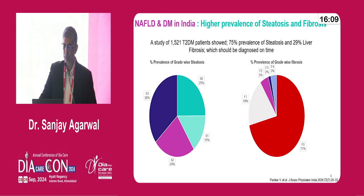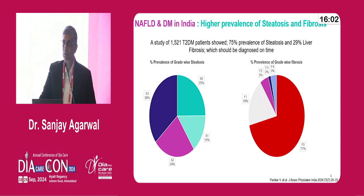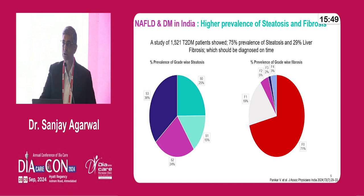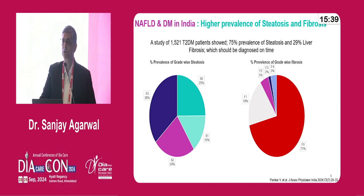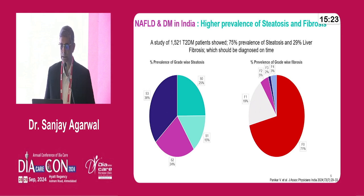A paper by Vijay Panikkar and associates, published in JAPI this year, looked at about 1,500 patients with diabetes. It showed 75% prevalence of steatosis and 29% liver fibrosis in the study population. Although the population studied is small, the message is clear: it is not uncommon, and we need to screen our patients — particularly those with diabetes — for steatosis and liver fibrosis.